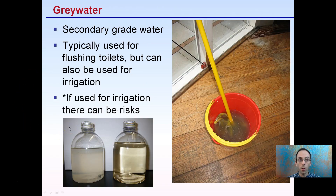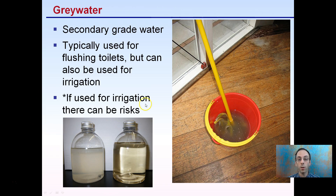There's something called gray water — this is second-grade water, not perfectly clean, with a grayish look to it. This is typically used for flushing toilets, but it can also be used for irrigation. You don't have to use potable or drinking water for irrigation; gray water is often used for that. However, if it is used, there can be risks associated with it, so it needs to be used with caution. In different situations it may be more advantageous than others.